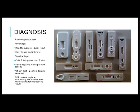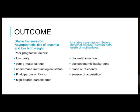Regarding the outcome of malaria in pregnancy: in stable transmission areas, you may have an asymptomatic mother but with increased risk of anemia and low birth weight. In unstable transmission areas, there is more severe disease, preterm birth, and increased maternal and fetal mortality. Poor prognostic factors include low parity, young maternal age, non-immune immunological status, P. falciparum or P. vivax infection, high degree of parasitemia, placental infection, socioeconomic background, rural versus urban residency, and season of acquisition.